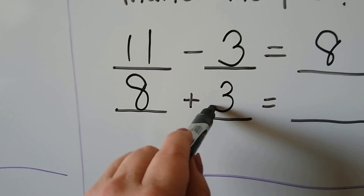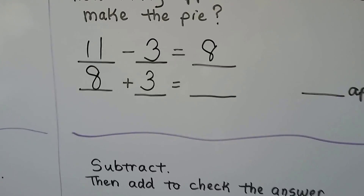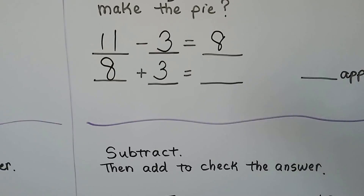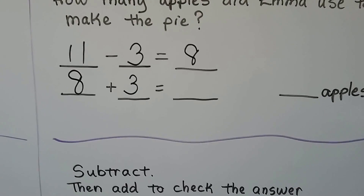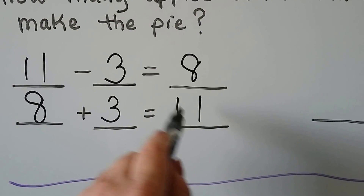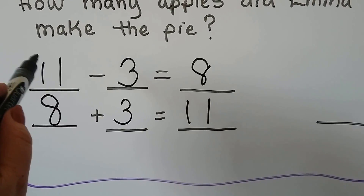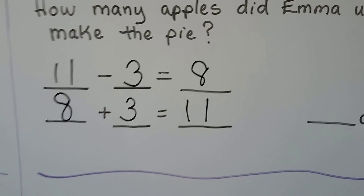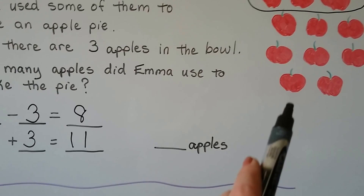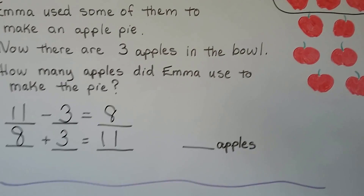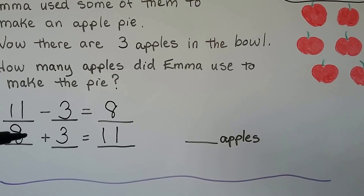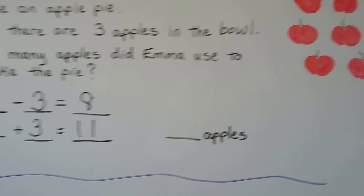So we have eight plus three. Counting on: eight, nine, ten, eleven. Yes — we have eleven. The sum for our addition sentence is the same as the minuend in our subtraction sentence, so we know we did it correctly. How many apples did Emma use to make the pie? She used eight apples.